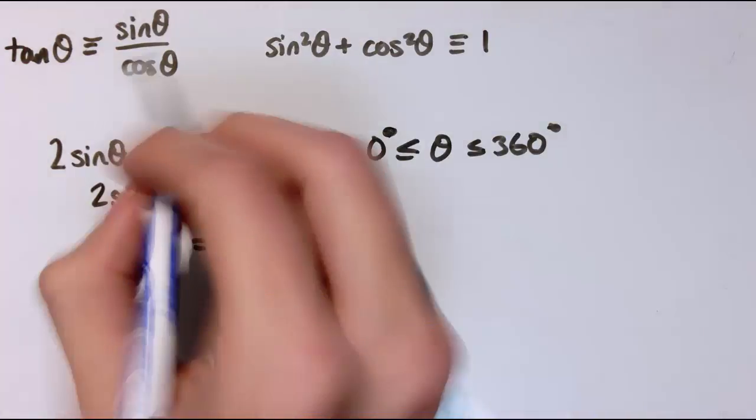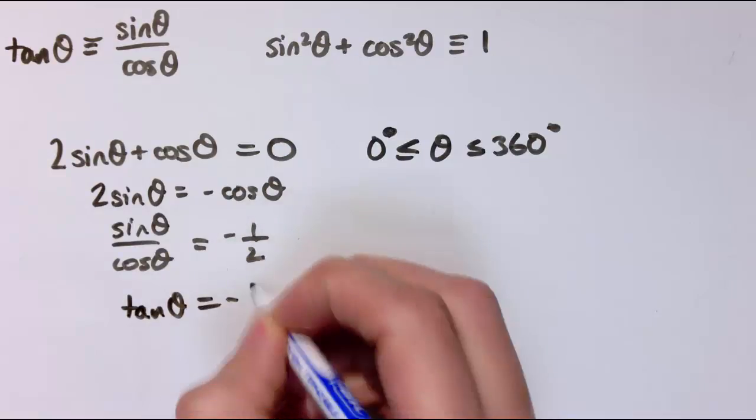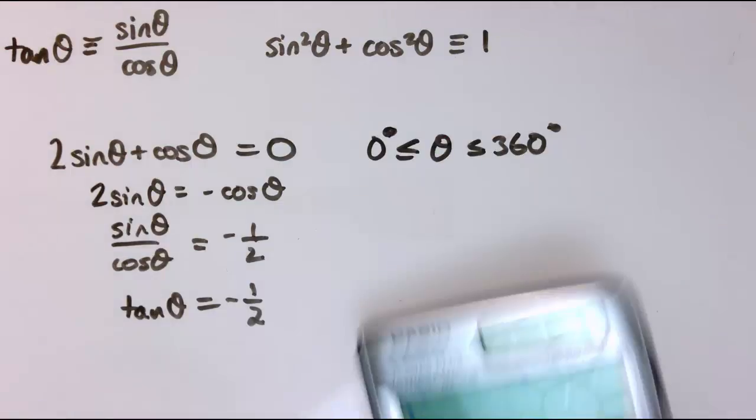And sin θ over cos θ, that's always equal to tan θ. So I've now got tan θ equals minus 1 half. So I've taken something that had sin θ and cos θ in it, and I've got something that's just got tan θ in it now.